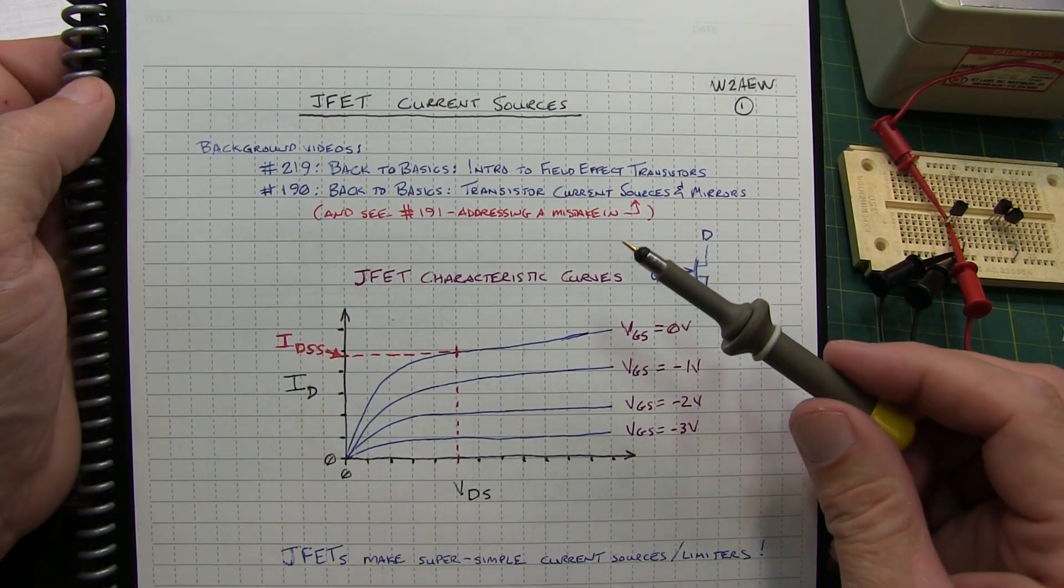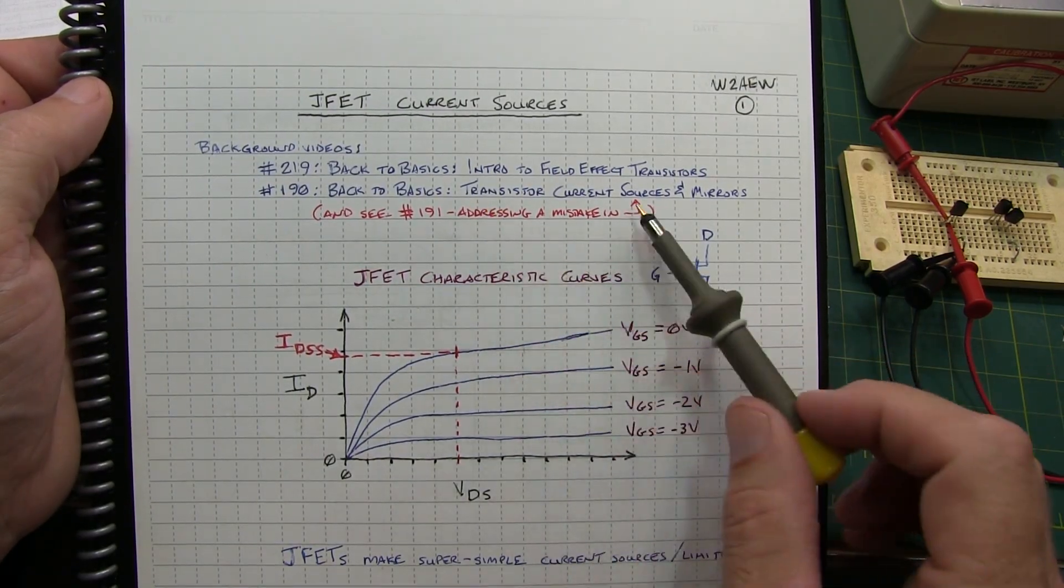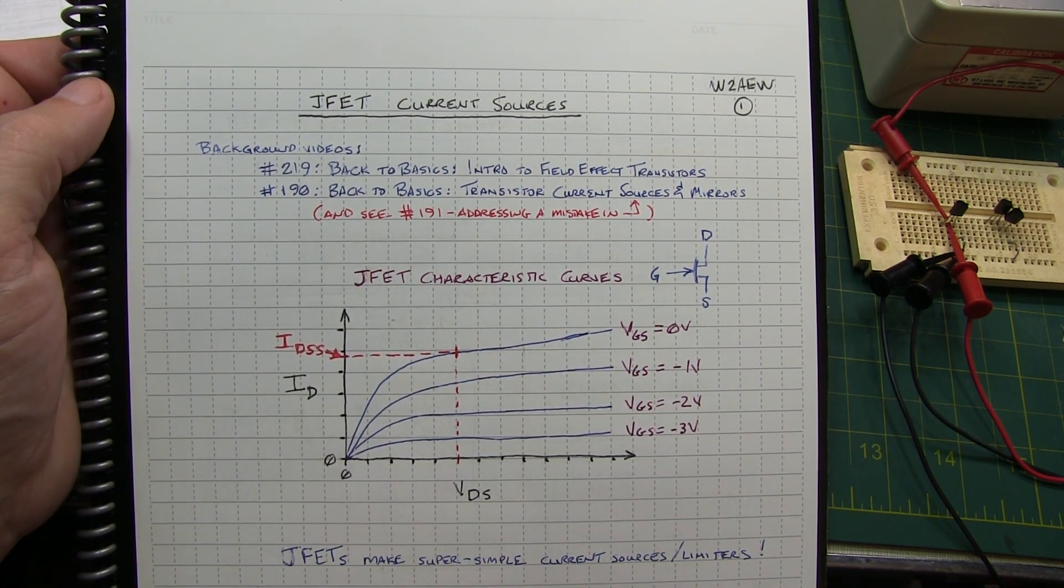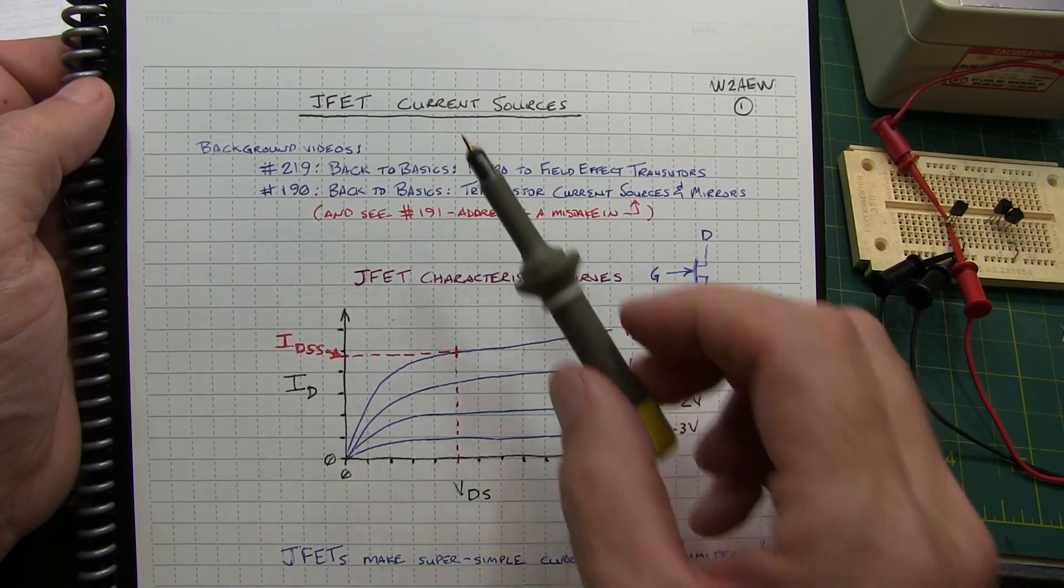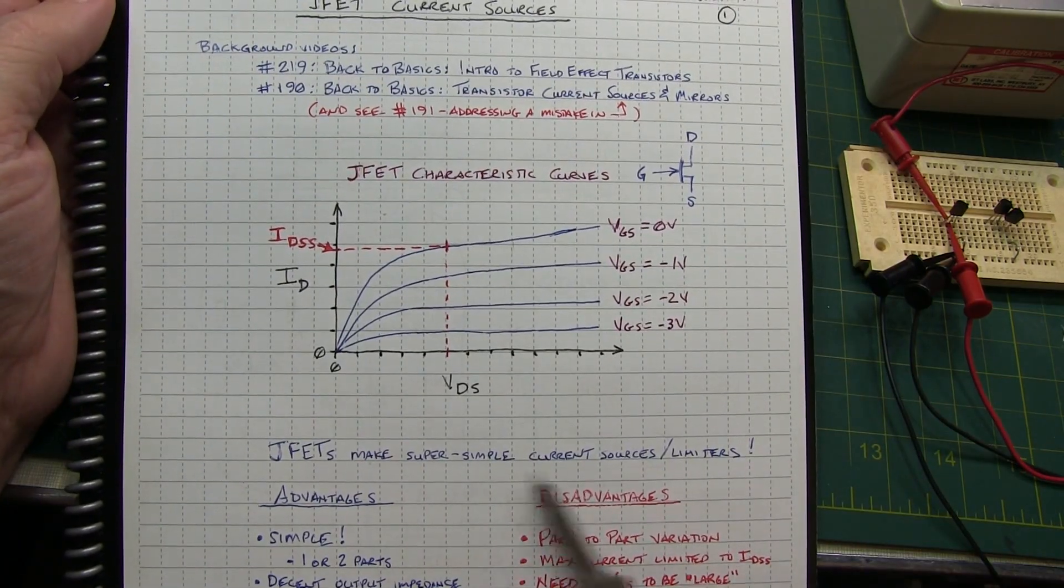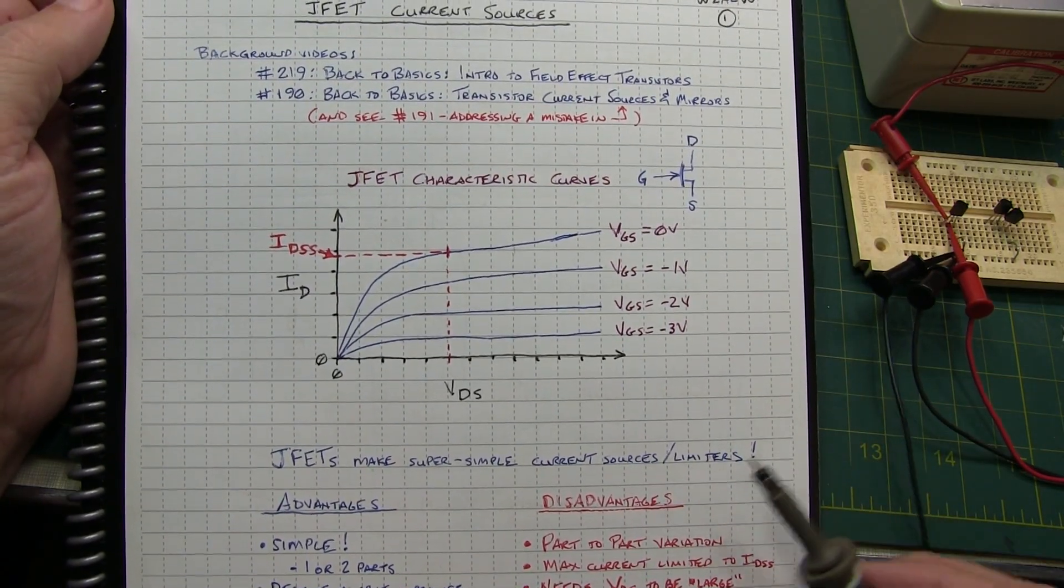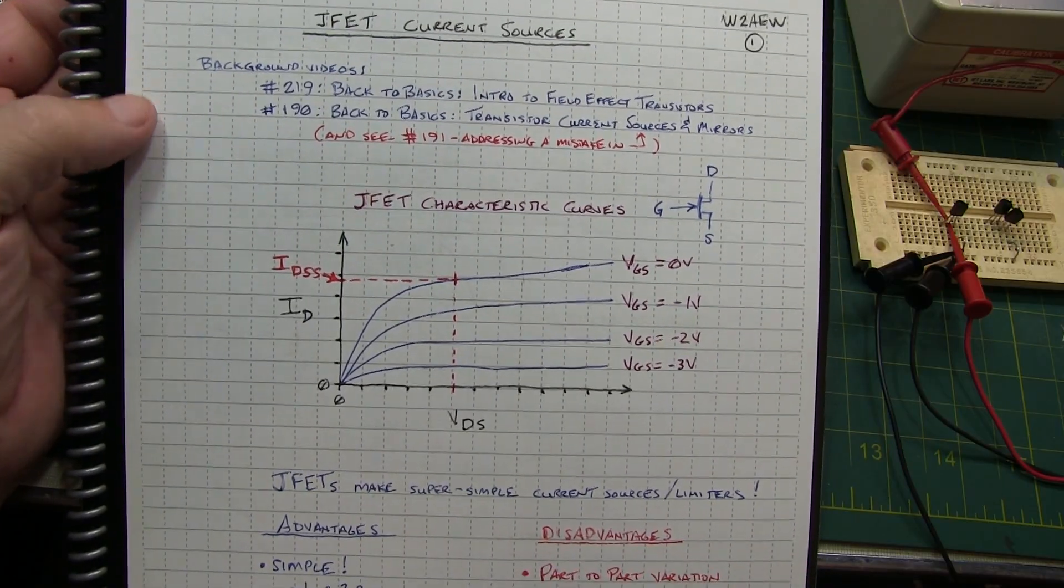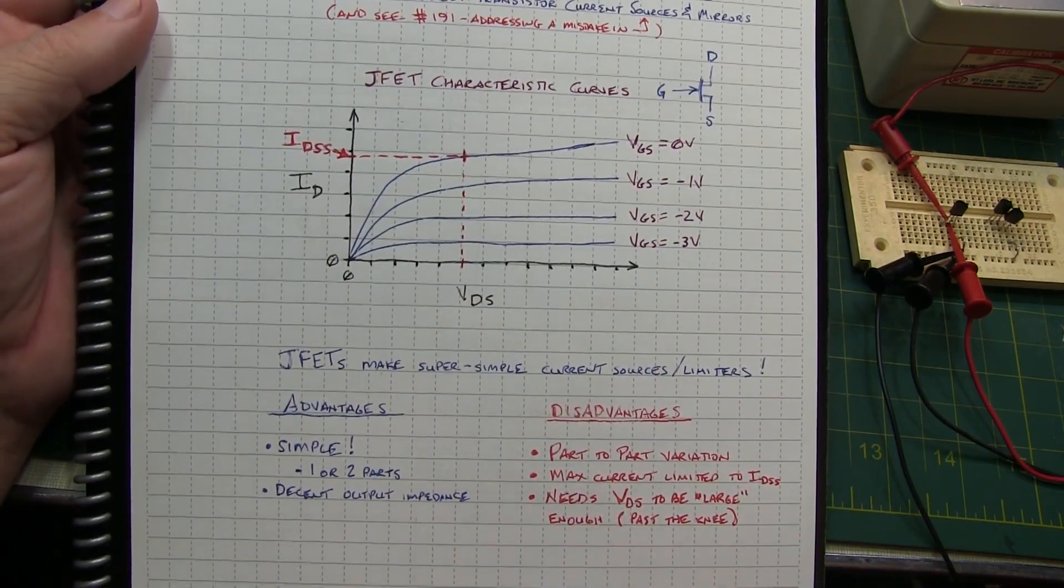While I covered current sources and current mirrors pretty extensively in video 190, we really only talked about them in terms of bipolar junction transistors, not JFETs. I wanted to cover JFET current sources because we can actually make really super simple current sources and current limiters with JFETs.